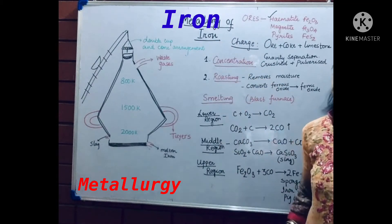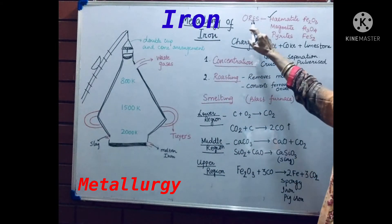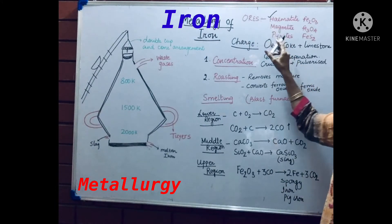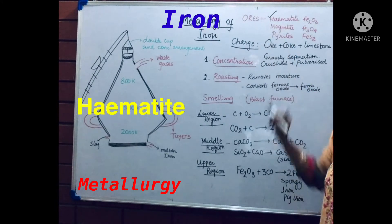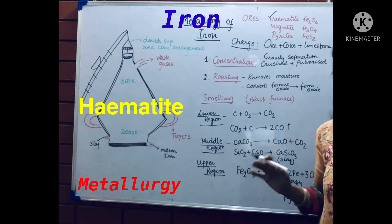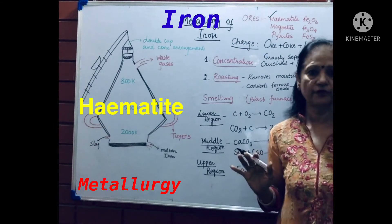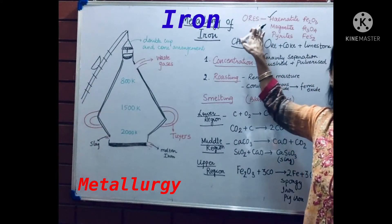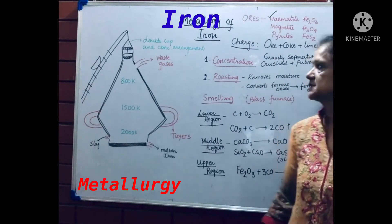Metallurgy of iron. The iron ores available are hematite, magnetite, and pyrites, out of which hematite is majorly used in India. So if your question asks to name the major ore of iron, only hematite will be accepted. This is the ore that we use here.